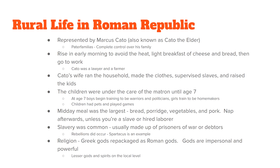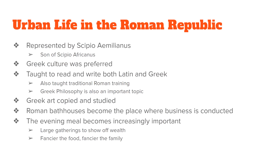The Roman Republic also had a really big city life, and the biggest city was Rome. Scipio Aemilianus — the son of Scipio Africanus — gives us a very good look at urban life. He preferred Greek culture: he wore Greek clothes and spoke the language of Greece. He was taught both Latin and Greek, so he learned Greek culture and traditions alongside traditional Roman studies.